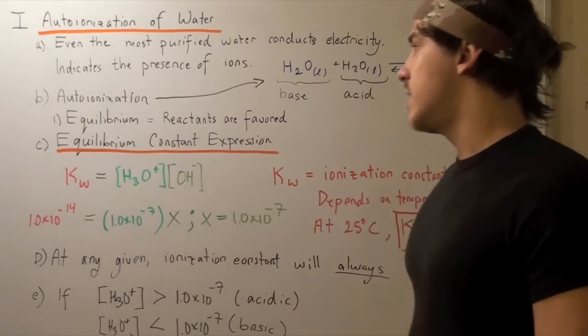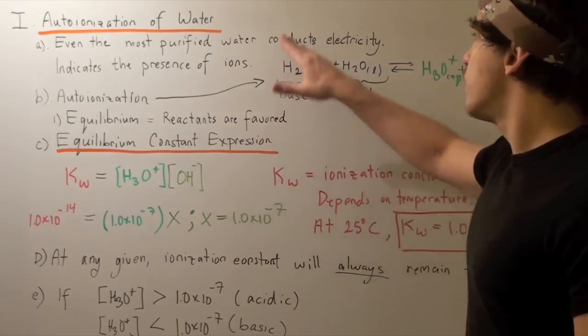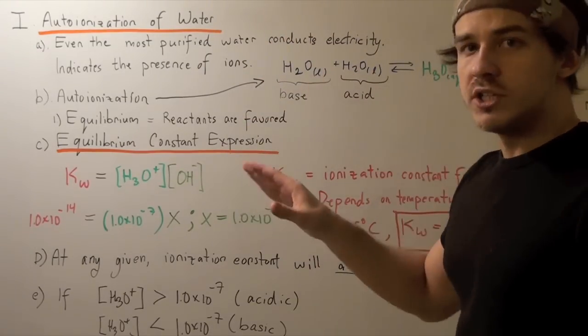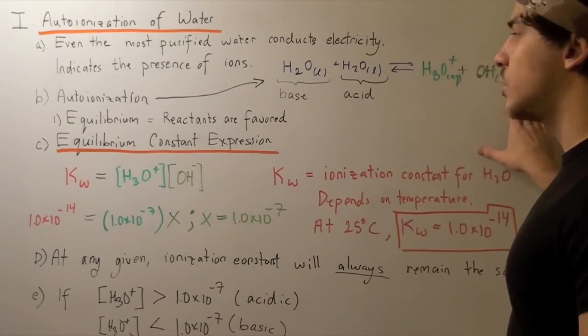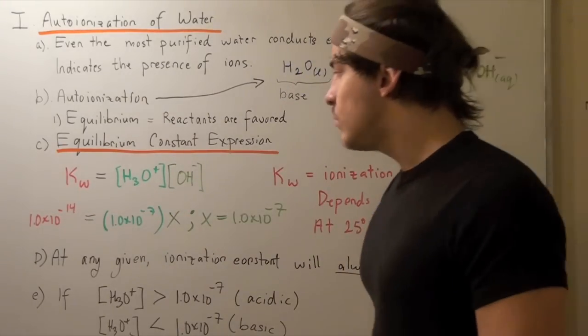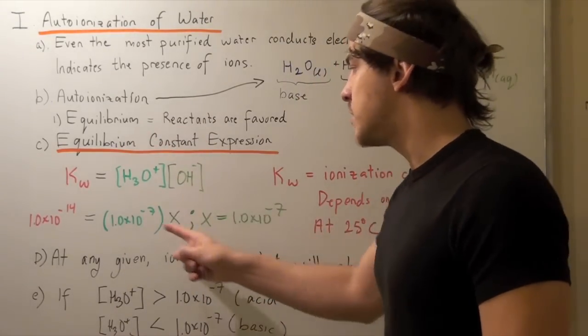Equilibrium constant expression. Let's write the equilibrium constant expression for our reaction above. Remember, liquids are not included, only aqueous solutions are included. So our Kw, our constant, is equal to the concentration of hydronium times the concentration of hydroxide.